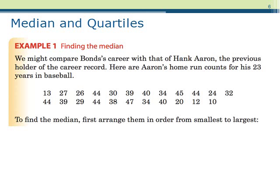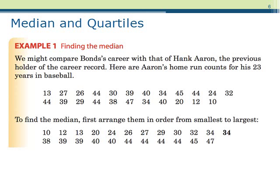Let's look at an example. Below are the home run counts for Hank Aaron over 23 seasons. Let's find the median of this data set. First, we arrange the observations from smallest to largest. Because there are an odd number of observations, the median will simply be the center observation. In this case, it's 34.